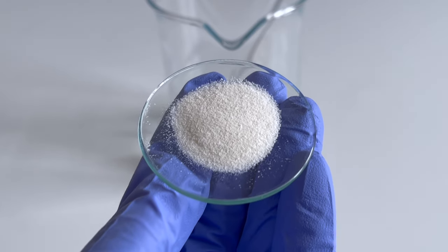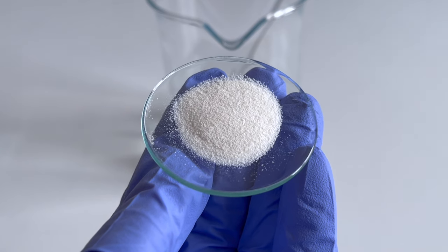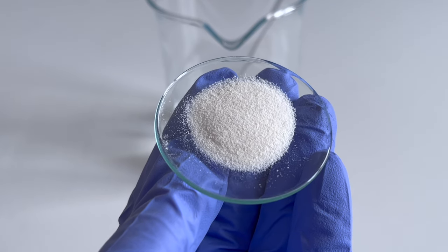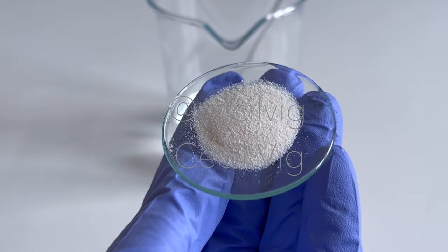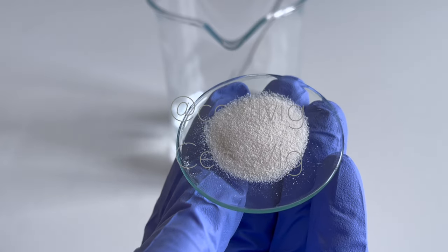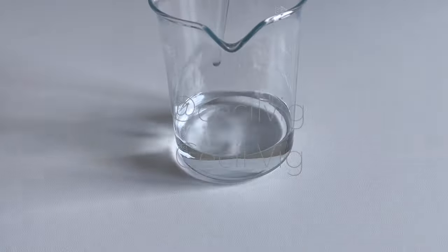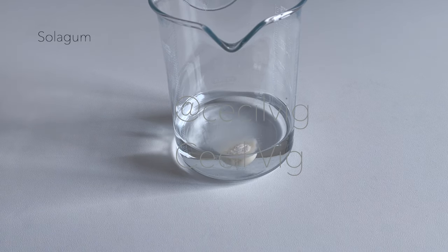Solar gum is a blend of xanthan gum and acacia senegal gum which dissolves quickly in water to form a non-sticky water-based gel with a pleasant skin feel. It is stable over a wide pH range from 3 to 12.